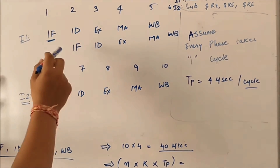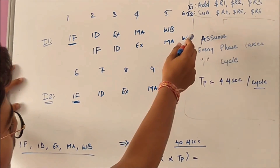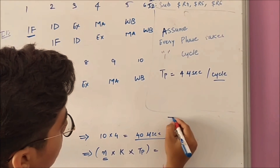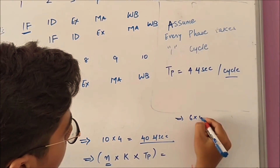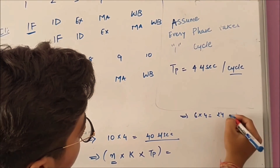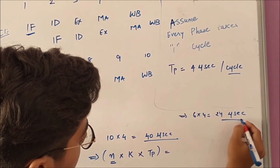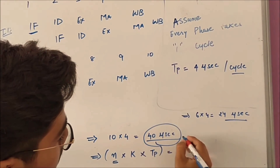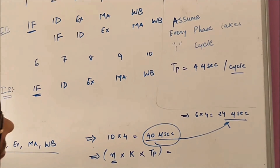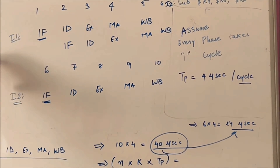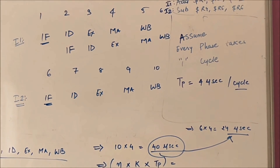If we use pipelining, it will be only 6 cycles. If we consider the time, 6 into 4 is 24 microseconds only. So rather than 40 microseconds, we can complete it in 24 microseconds. This is the difference between pipelining and non-pipelining.